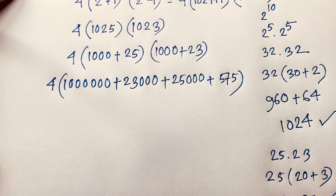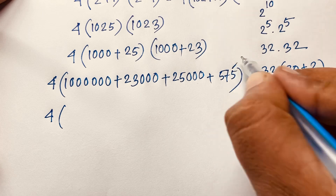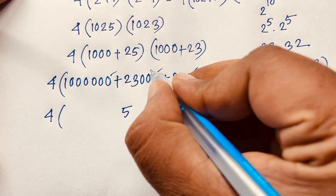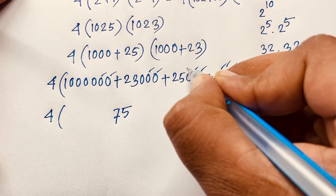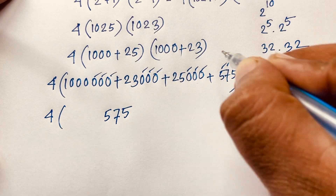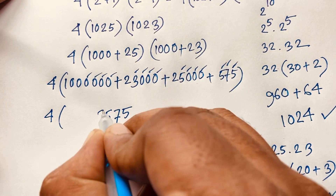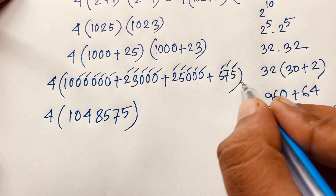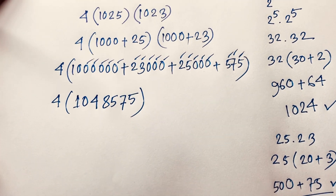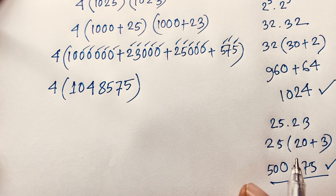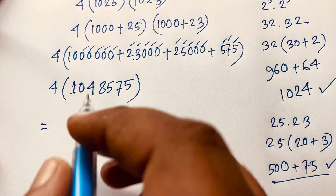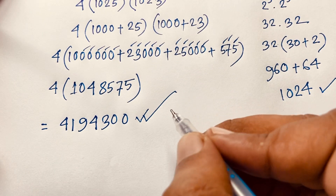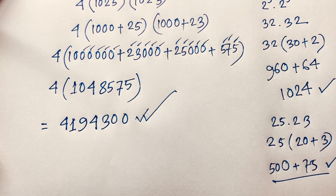Now adding all values: 1,000,000 plus 23,000 plus 25,000 plus 575. Adding: 575, then 48,000, giving 1,048,575. Multiplying by 4 gives 4,194,300. So the answer to 4 to the power 11 minus 4 is equal to 4,194,300.